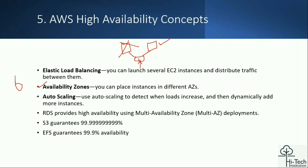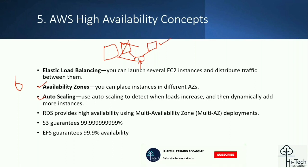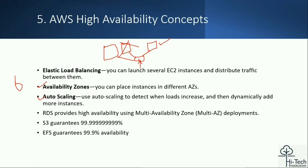The third high availability strategy is Auto Scaling. When an instance goes down, it is automatically replaced by producing new instances in your load balancer. This gives you an additional level of auto scaling capability.